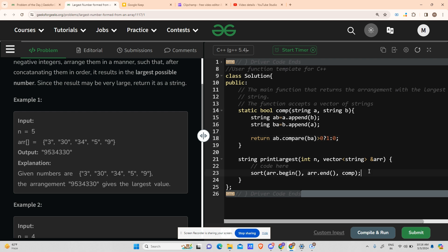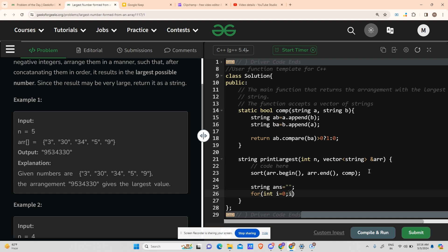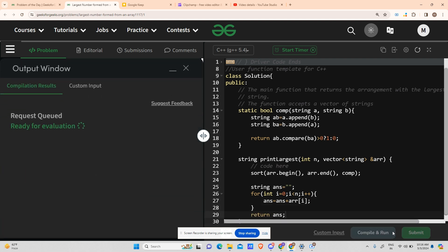And now after I have sorted the array, what I will do is declare string answer. For int i going from 0 up till n, i++, what I will do is answer equals answer plus arr[i], and then return your answer. Hope it will work fine. Let's try to compile and run it.